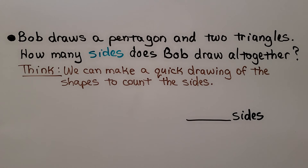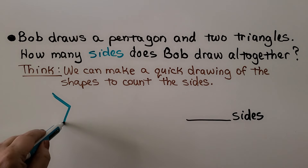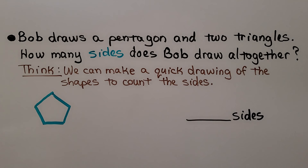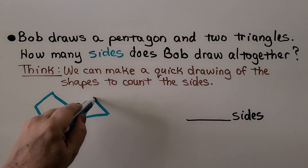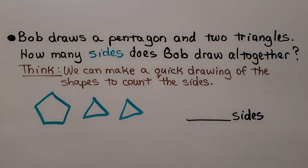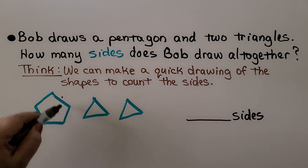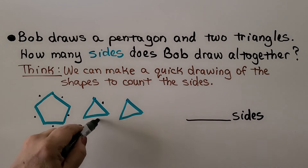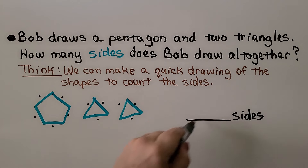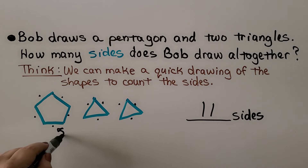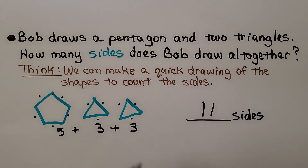This one says: Bob draws a pentagon and two triangles. How many sides does Bob draw all together? We can make a quick drawing of the shapes to count the sides. A pentagon has five sides and a triangle has three sides. He drew two triangles. Counting all sides: one, two, three, four, five, six, seven, eight, nine, ten, eleven — that's eleven sides. Five plus three plus three equals five plus six, which equals eleven.